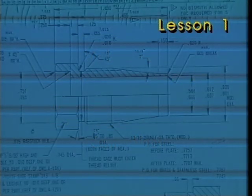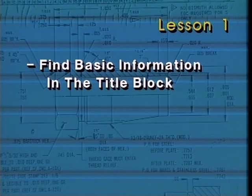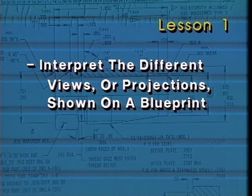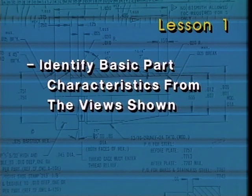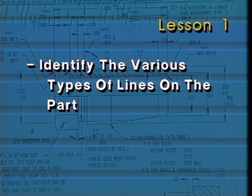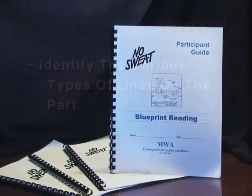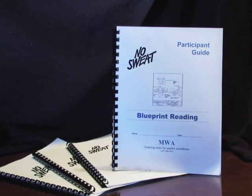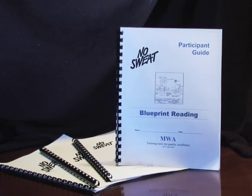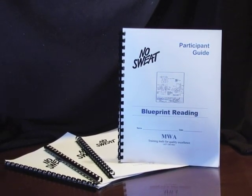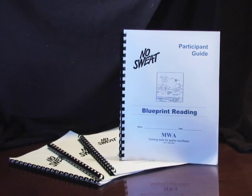Let's pause for a moment to review what we've covered in Lesson 1. In this lesson, you've seen how to find basic information in the title block, interpret the different views or projections shown on a blueprint, identify basic part characteristics from the views shown, and identify the various types of lines used to draw a part. This completes the videotape portion of Module 1, Lesson 1: Projections and Types of Lines. Stop the tape now and complete the exercises in your No Sweat Blueprint Reading Participants Guide.